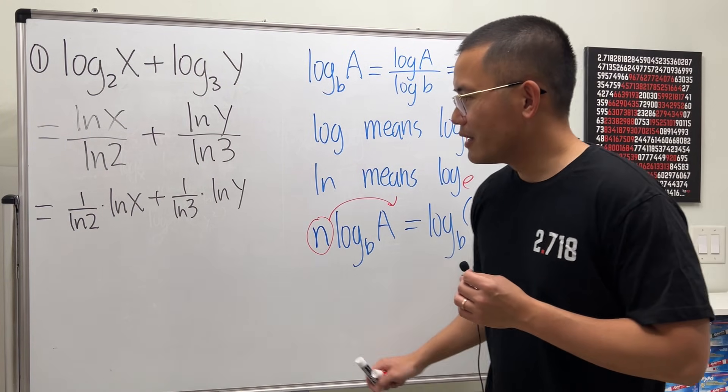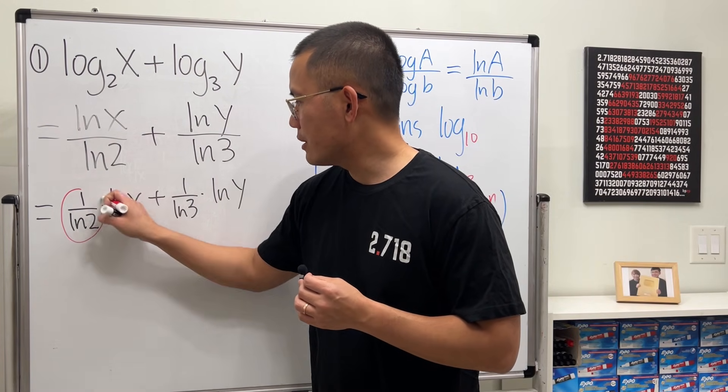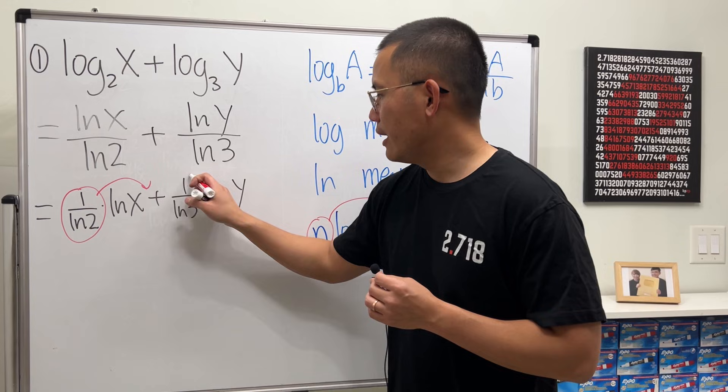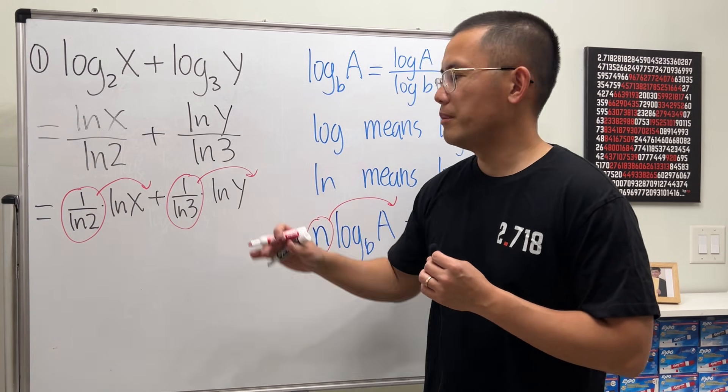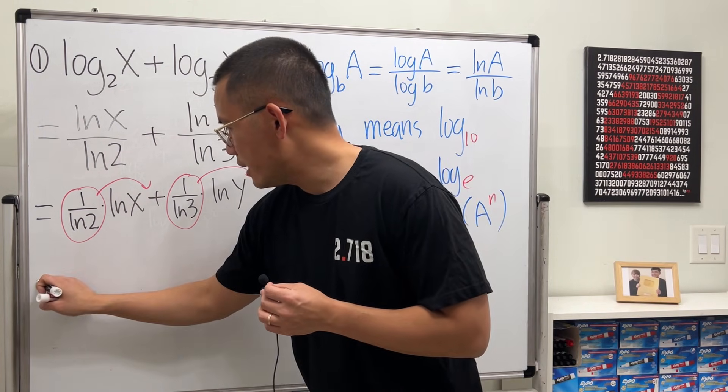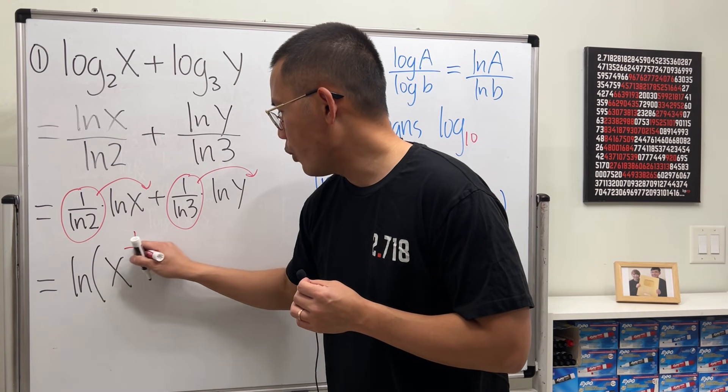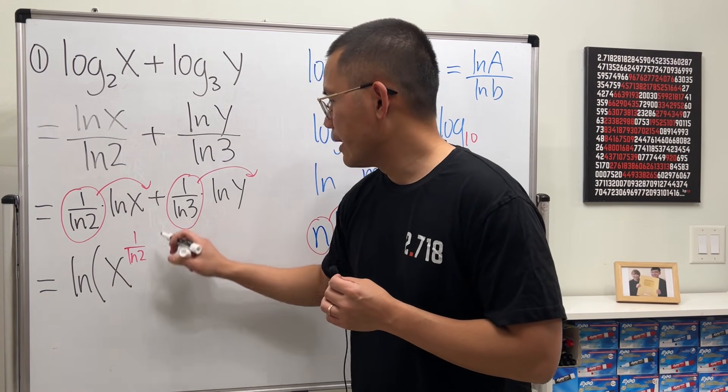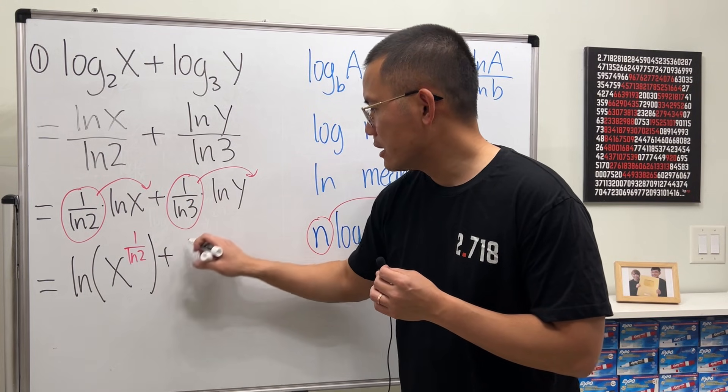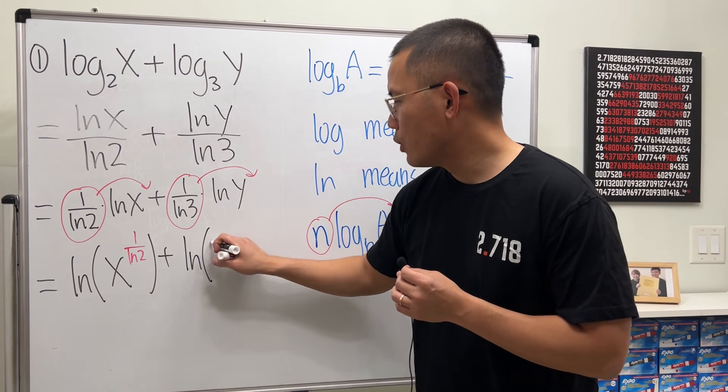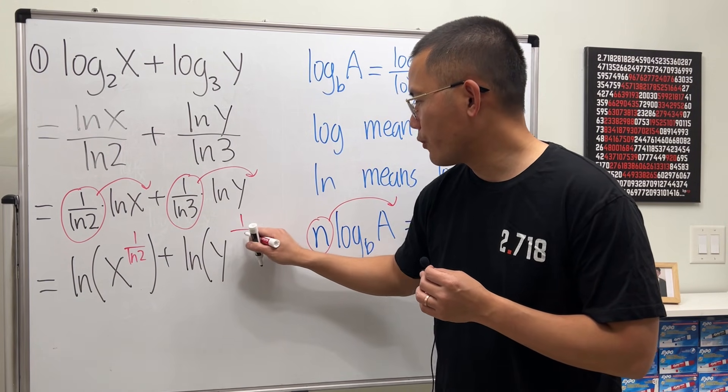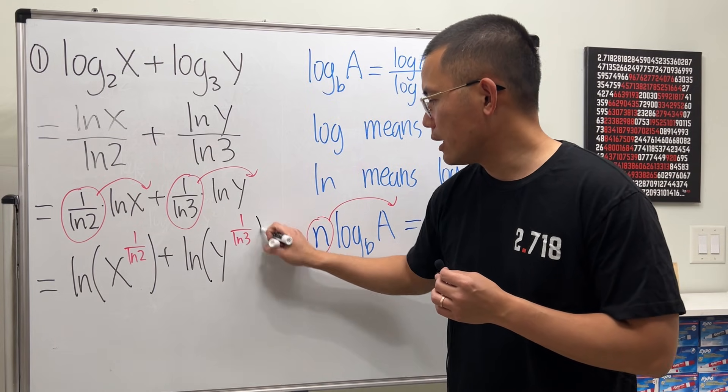So we can just put this number here and this number here and make them into exponents. Then we have ln of x to the 1 over ln 2 power, and then we add ln of y raised to the 1 over ln 3 power.